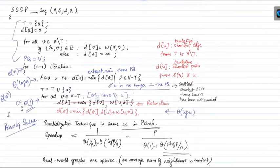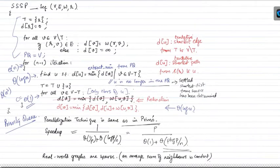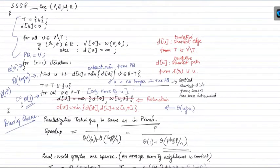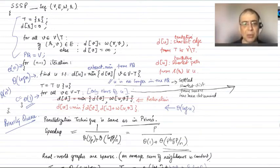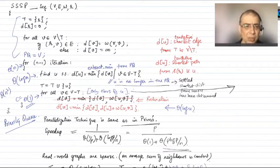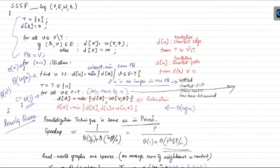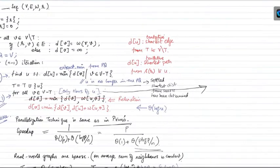We realized that in the sparse case, there's a lot of extra work being done. Instead of that, the better way to do it is to maintain a priority queue. Instead of trying to update for every vertex, you just want to update for the neighbors of you. So instead of updating all the vertices, you only update the neighbors because it's a sparse graph, and on average there are only a constant number of neighbors of a vertex.